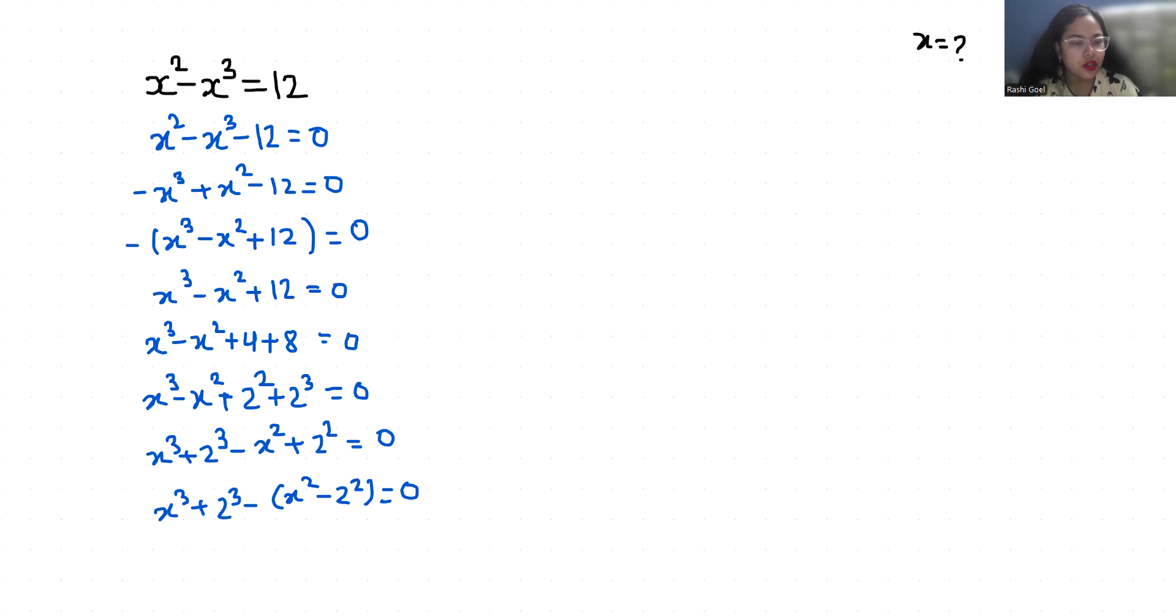Now I am going to use two very famous identities: a cube plus b cube is equals to a plus b times a square plus ab plus b square.